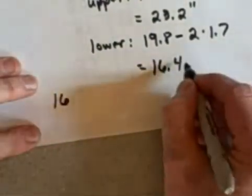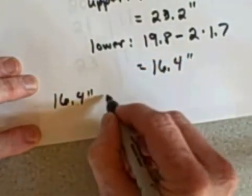So my range of normal usual values in this case of logs cut by me just eyeballing it, the range goes anywhere from 16, these are inches by the way, so 16.4 inches clear up to 23.2.